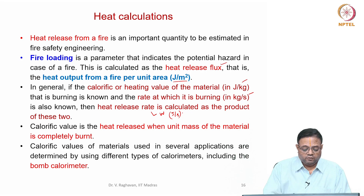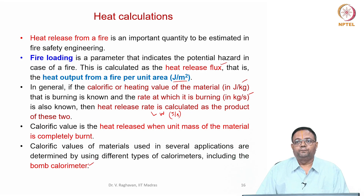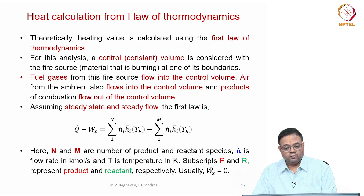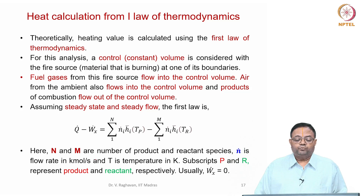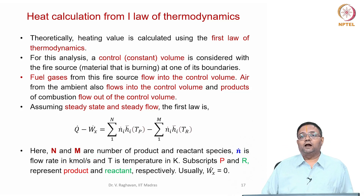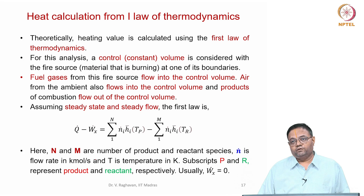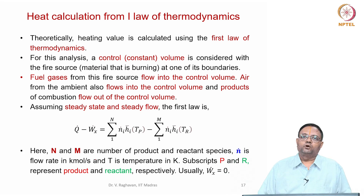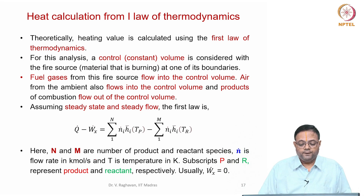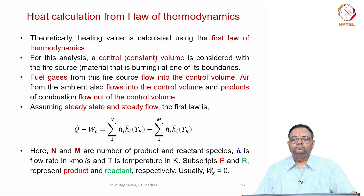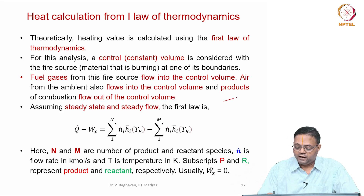Calorific value is the heat released when one kilogram of material is completely burnt — typically expressed as joule/kg, kJ/kg, or MJ/kg. Calorific values of materials are determined by various calorimeters, such as the bomb calorimeter. There is also a way to calculate calorific value using the first law of thermodynamics, giving a theoretical value that agrees closely with measured values.